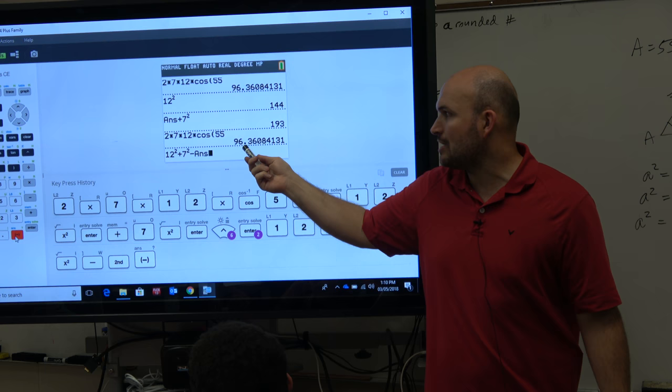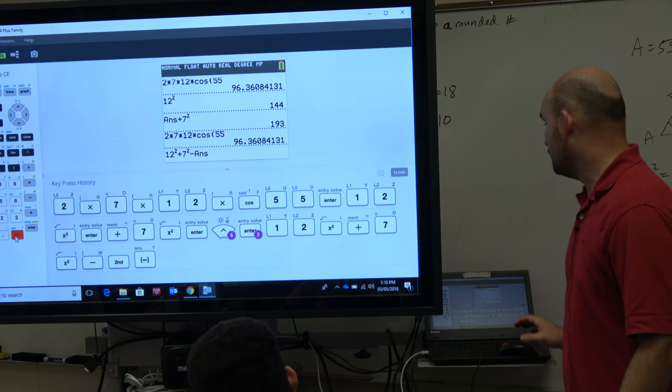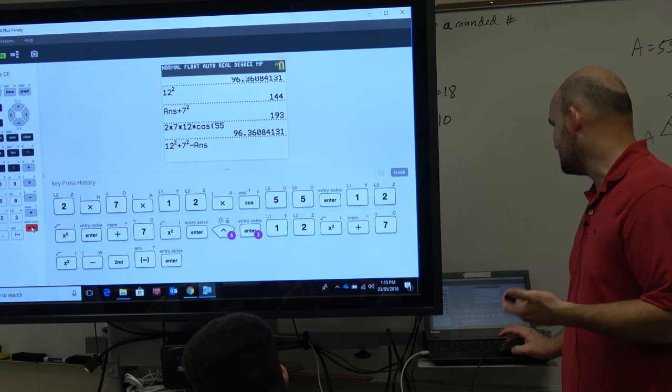Now, notice I'm subtracting it because I didn't use the negative 2, right? I made that a positive 2. And then I'm going to, that's why I'm going to subtract that. So again, if you typed it all at once, that's perfectly fine. That's just the way that I like to do it. Either way, you should get the exact same value of me, which is 96.639.